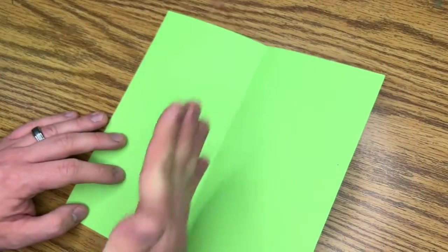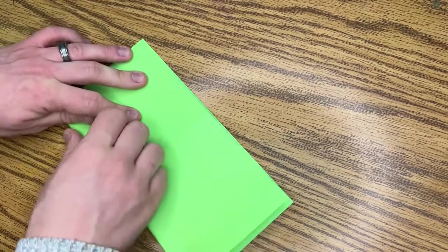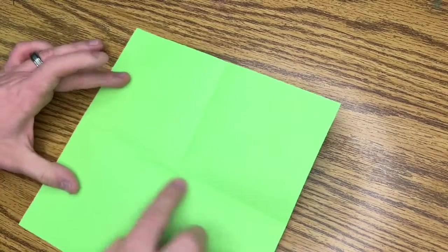All right, the line should be heading towards you. I want you to fold it away from you. That way, when you open it up this time, there should be a cross. Give me a thumbs up once you have that.